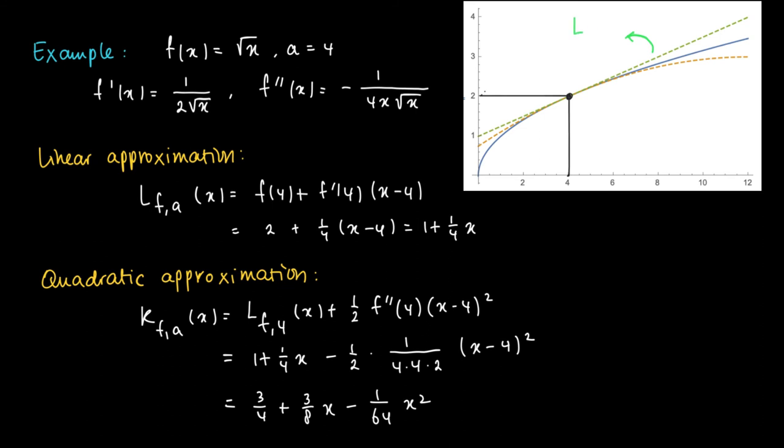In this picture, you see the linear approximation in green. In orange, you see the quadratic approximation, and you see that the quadratic approximation tries to adjust for the curvature of the function. It's not a straight line; it bends just as the function does.